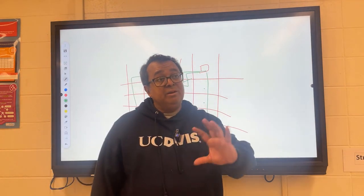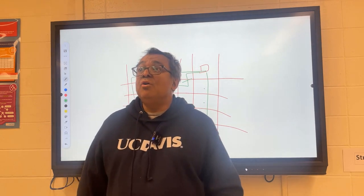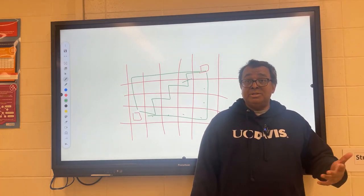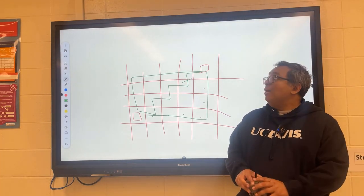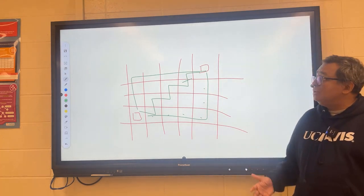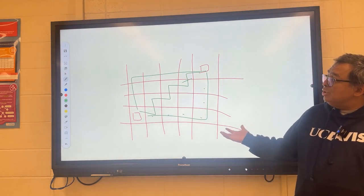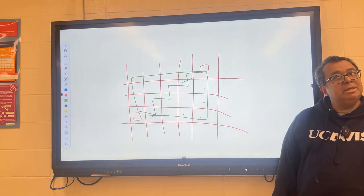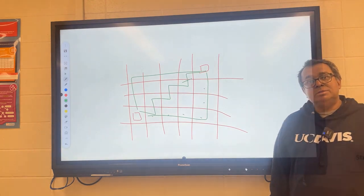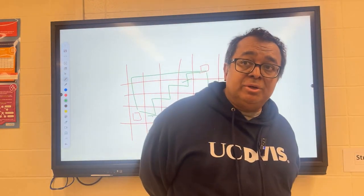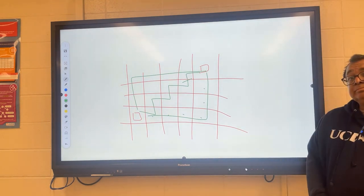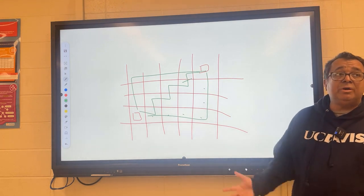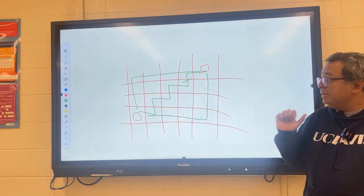The answers for taxicab distance are going to be different from crow's fly. Crow's fly has a continuous set of real numbers as answers. In contrast, the range of solutions for a taxicab problem — as one student noted — would be integers. The answers here are going to be integers.